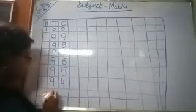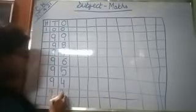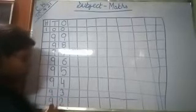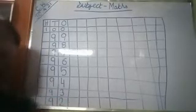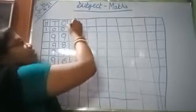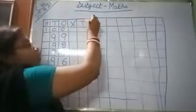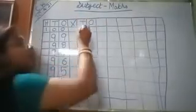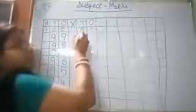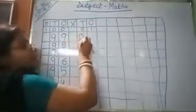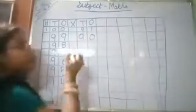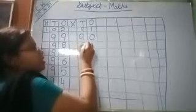Then 9, 3 — 93. Then 9, 2 — 92. After that, cut here, write T and O, and write 92 here. Then 9, 1 — 91. Then 9, 0 — 90.